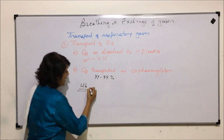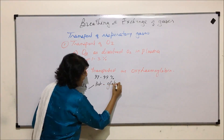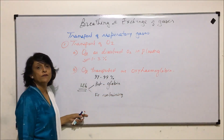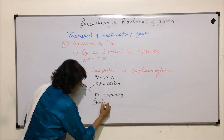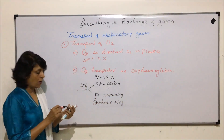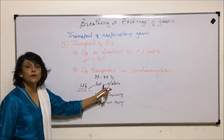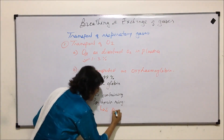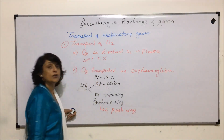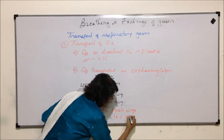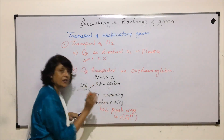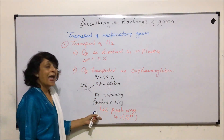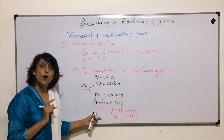Hemoglobin is made up of two parts: it has a protein that is globin, and it has an iron-containing part known as the porphyrin ring. The porphyrin ring, also known as the prosthetic group of the globin protein, is made up of four pyrrole rings, and each ring has one ferrous ion. The iron part in the hemoglobin molecule is in the form of ferrous, and each ferrous binds to one molecule of oxygen.